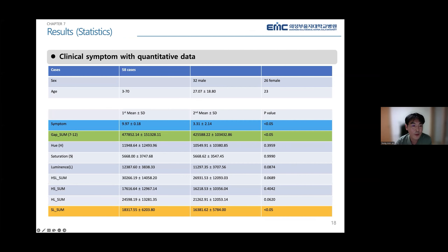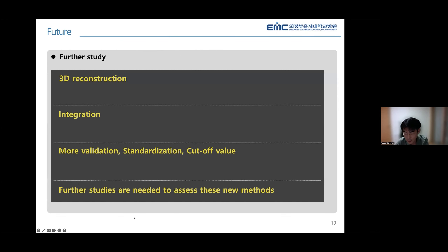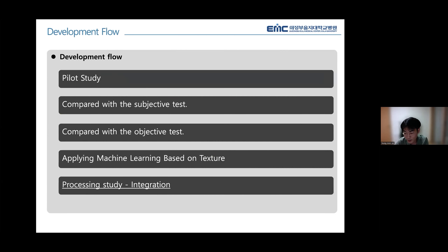This is a previous study of my subject comparing the surface by symptom. We obtained results showing significant differences with the Gaussian sum and the excess sum, meaning there are both color differences and spatial differences. For further study, 3D reconstruction, integration, validation, and standardization would be needed. We have made various research attempts and are currently working on integration, with good results and code value expected in the future.